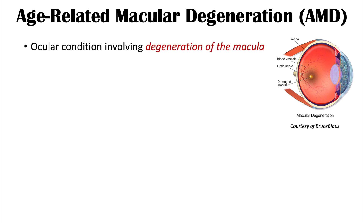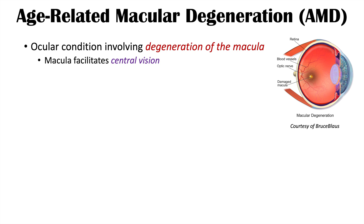Age-related macular degeneration is an ocular condition involving degeneration of the macula. The macula is part of the back of the eye — it is part of the retina and contains a high concentration of cones, which are the light-sensitive photoreceptors in the retina. The macula facilitates central vision, and it also contains the fovea, which has the highest concentration of cones and is involved in focusing on fine detail.